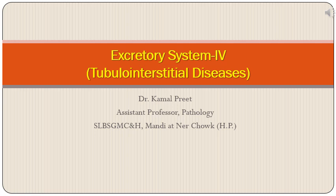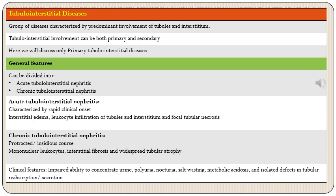In this lecture we will talk about tubulointerstitial diseases of the kidney. These are a group of diseases characterized by predominant involvement of tubules and interstitium, where the primary site of involvement will be tubules and interstitium. These diseases can be both primary and secondary; here we will be talking mainly about the primary tubulointerstitial diseases.